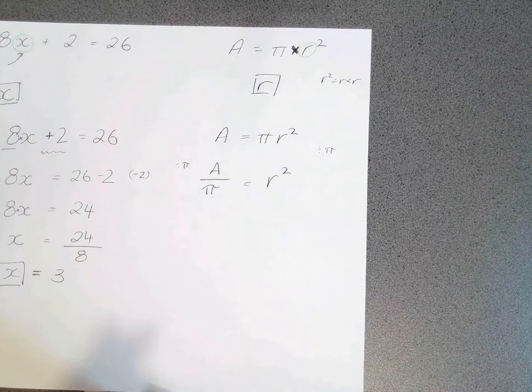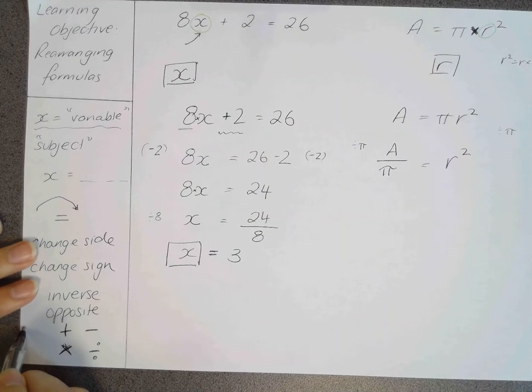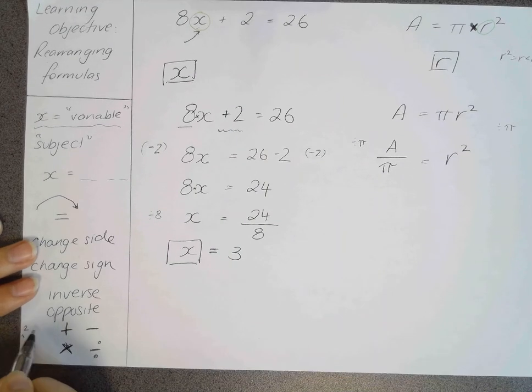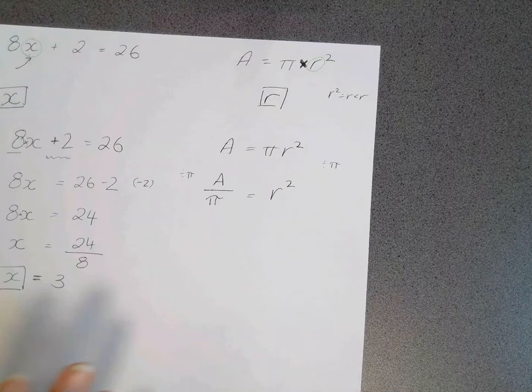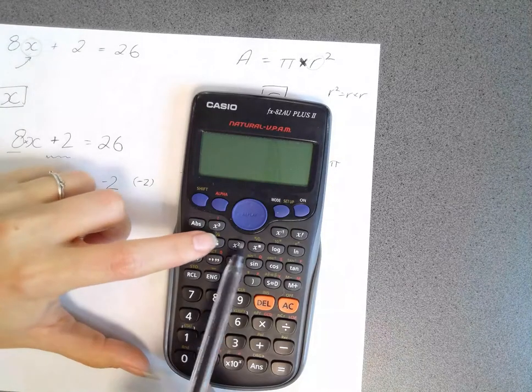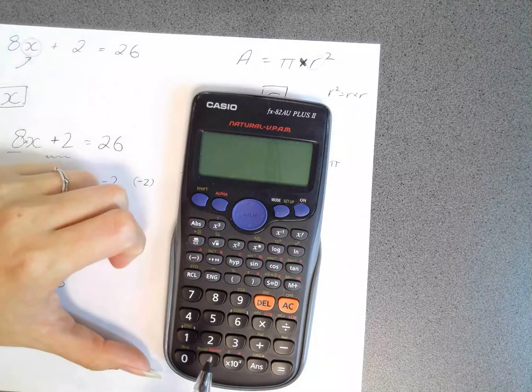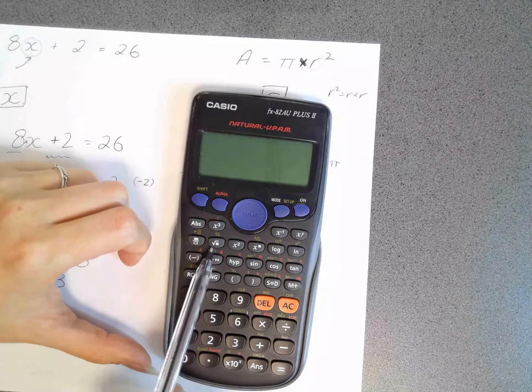And the opposite of squaring something is square root. So let's have a look at that. On the calculator, if you actually have a look here, here's our square button. And our square root is just right next to it.